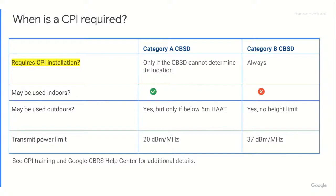And of course there is the power limit between a CAT A and a CAT B. Category A is 20 dBm per megahertz versus CAT B, which is significantly more powerful. CAT A is kind of like your home Wi-Fi device; CAT B is like a cell tower. That's why we need CPIs to validate and sign those Category B devices — they are more powerful with more reach and more potential to cause interference.